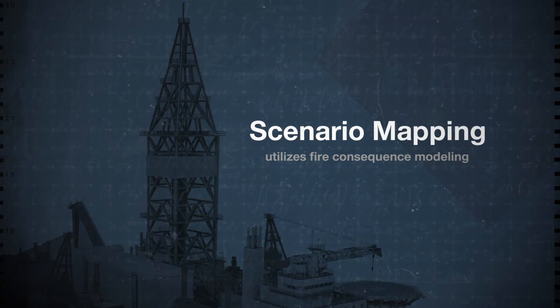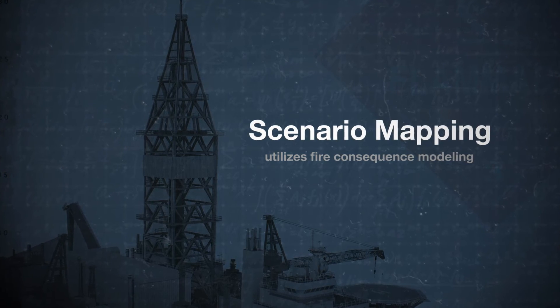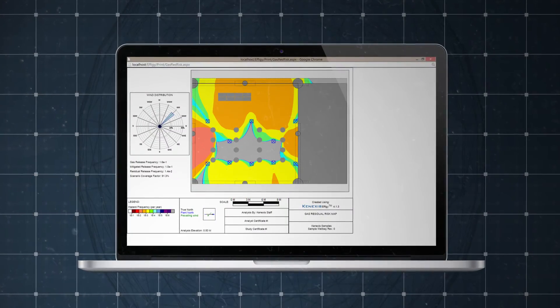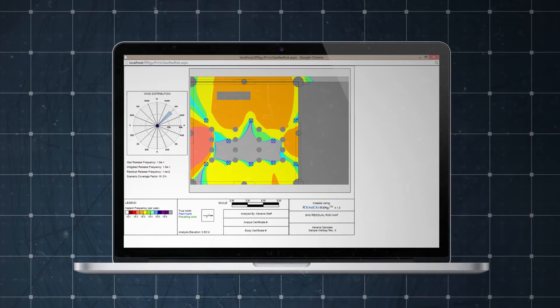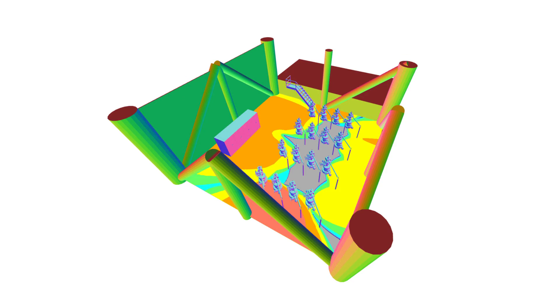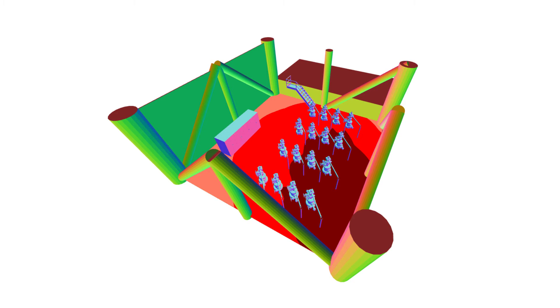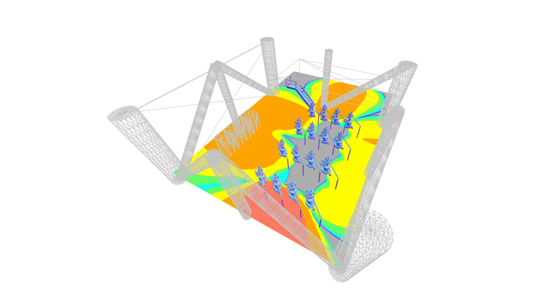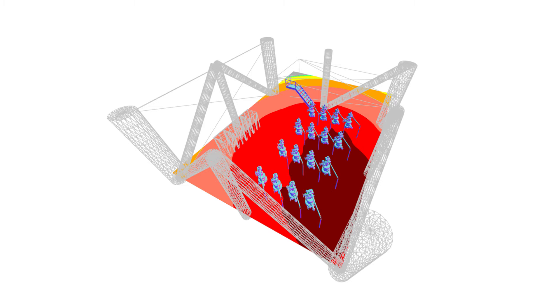Scenario mapping utilizes fire consequence modeling or gas dispersion modeling as an input. This allows the user to analyze how potential release scenarios overlap with areas where fire and gas leaks are detectable. Performing mapping in this way allows for rich graphical results known as risk maps, which can be used to easily identify weaknesses in the system design.